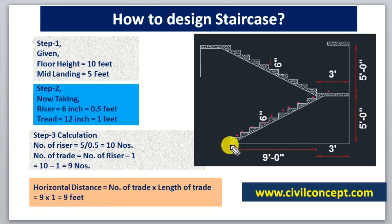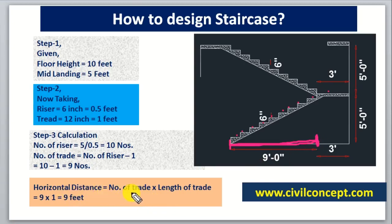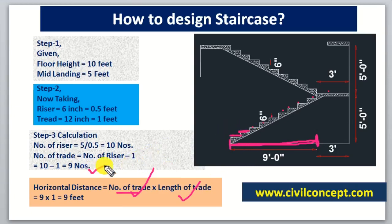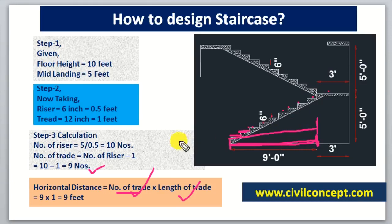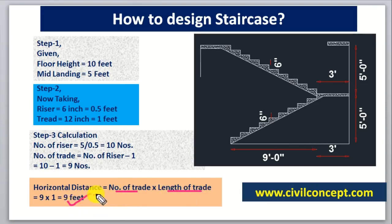Now we calculate the total horizontal distance for one flight. Horizontal distance = number of treads × length of one tread. We have 9 treads and each tread is 1 foot, so horizontal distance = 9 × 1 = 9 feet. You can see in the AutoCAD drawing that the dimension is 9 feet — these are the real dimensions.